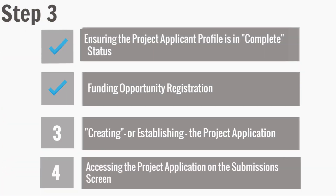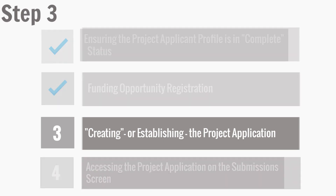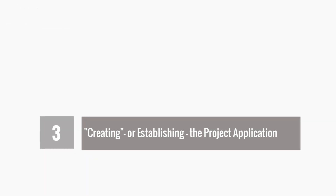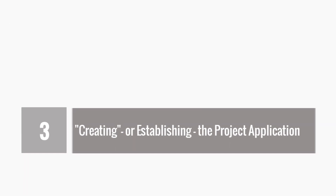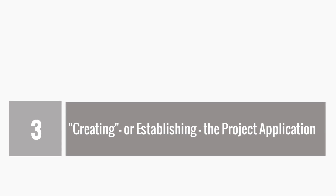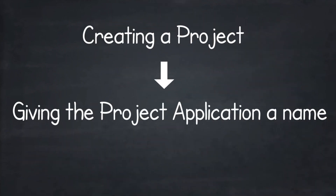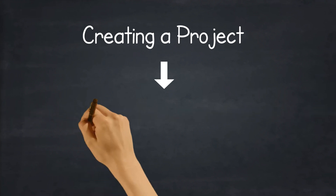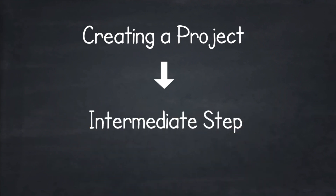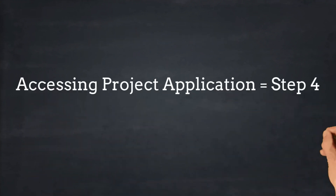Now we're ready to move on to Step 3: Creating or Establishing the Project Application. Project applicants must create a project in order for the project application to appear on the project screen. Creating a project means giving the project application a name — this is an intermediate step. You will not enter the project application from the project screen; that will occur in the fourth step, which we will discuss shortly.